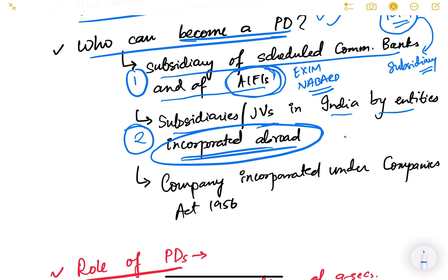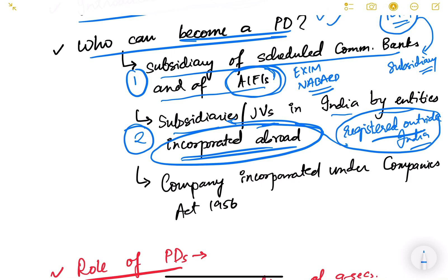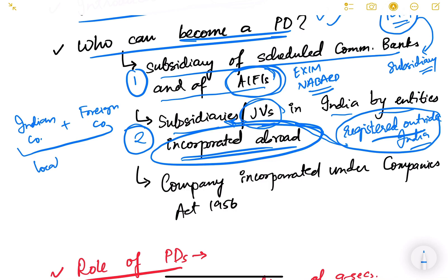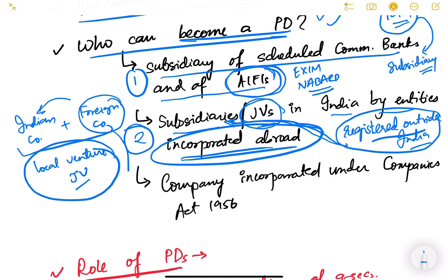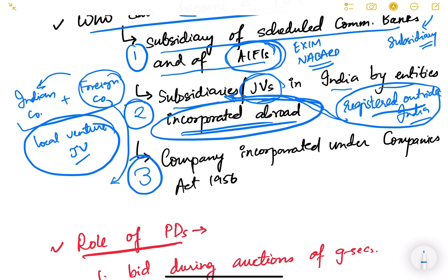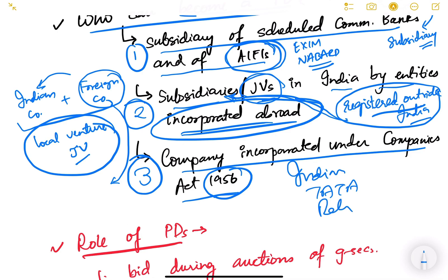The second eligibility criteria is that it can be subsidiaries or joint ventures in India by entities incorporated abroad. Companies registered outside India — not under the Indian Companies Act — if they have a subsidiary registered in India, or form a joint venture with an Indian company, can also become primary dealers. A joint venture means one Indian company plus a foreign company together forming one local venture.